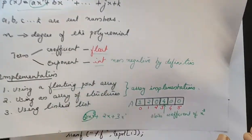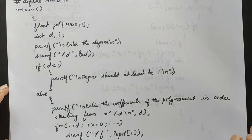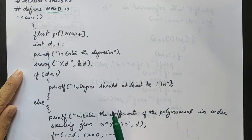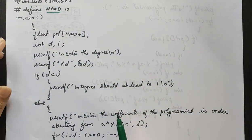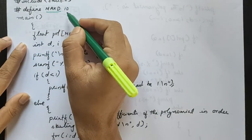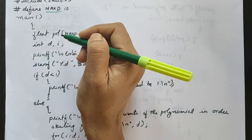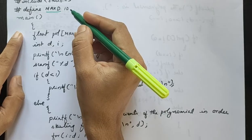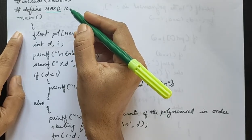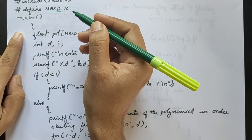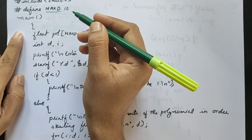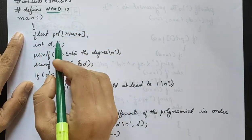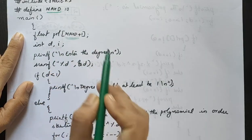I already have a program. MaxD is a symbolic constant representing the maximum degree. We set maximum degree to 10. So we can store a polynomial up to degree 10, which means we can store up to 10 terms. The polynomial array is declared with size MaxD plus 1.